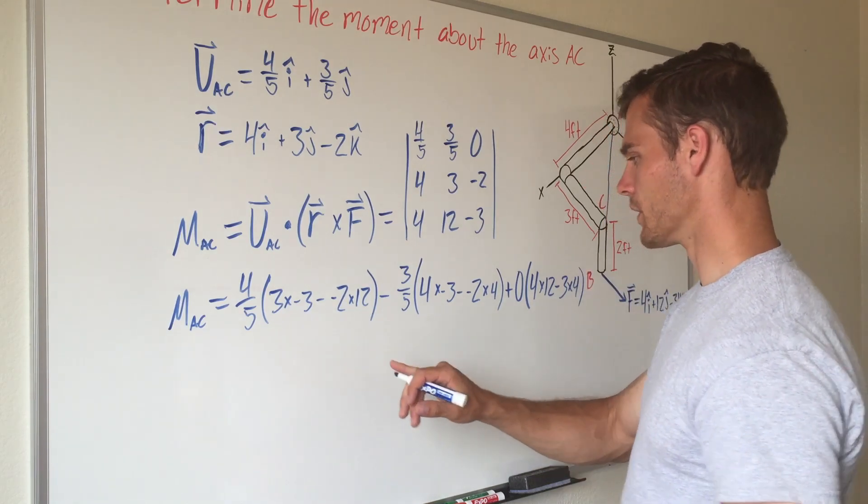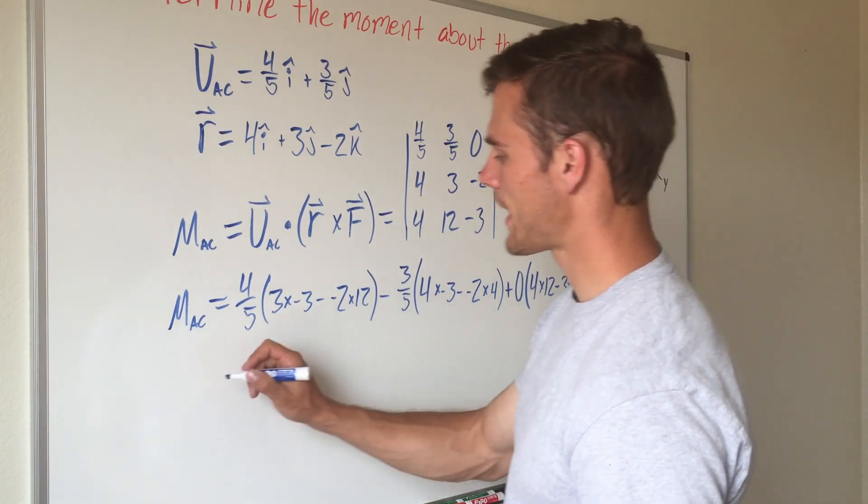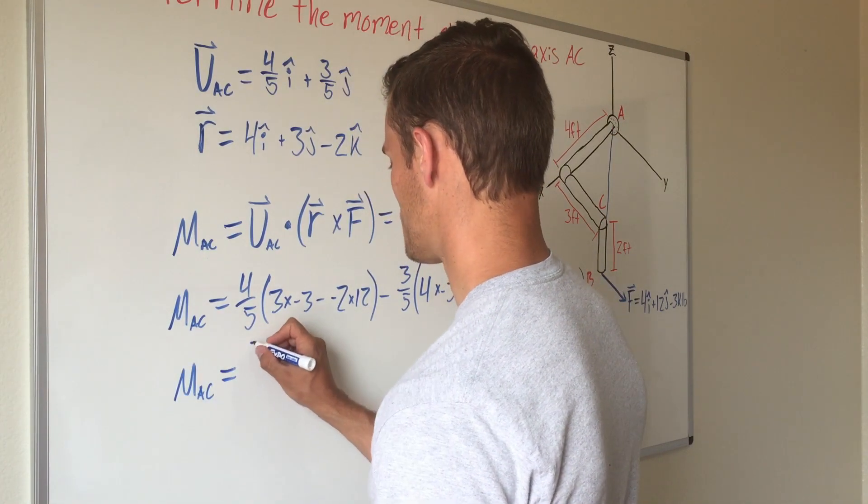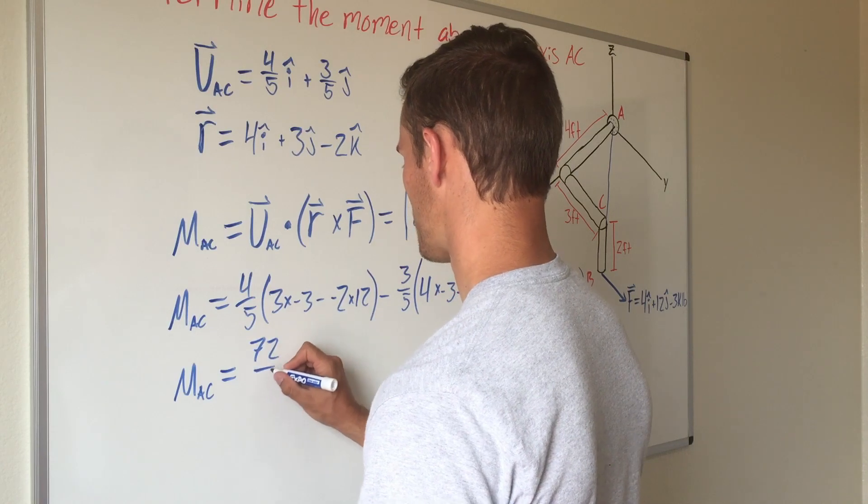And then do all the arithmetic with that and you'll get that the magnitude of the moment about AC is equal to 72 fifths.